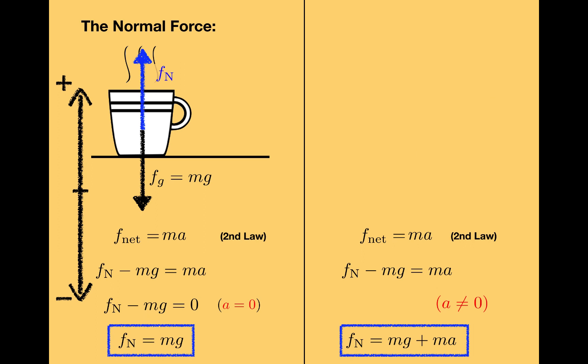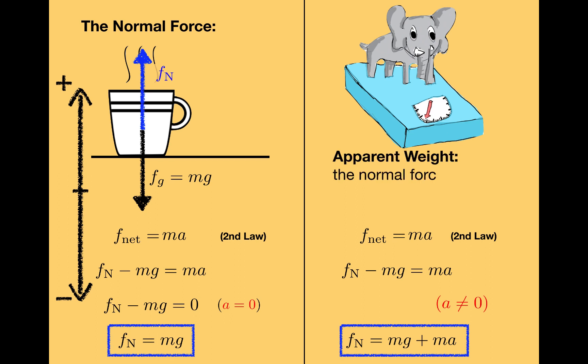If you pay careful attention the next time you ride an elevator, you might be able to feel the difference in the normal force when the elevator accelerates. If you bring a scale into the elevator and stick a baby elephant on it, you can see the reading change on the scale as the elevator accelerates. The scale measures the normal force acting on the elephant, and we refer to this normal force as the apparent weight. So in this elevator example, the apparent weight of the elephant is changing as the acceleration changes, but the true weight, which is mg, is not changing.